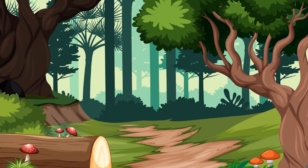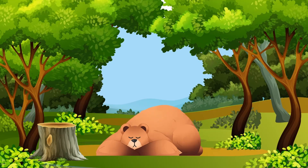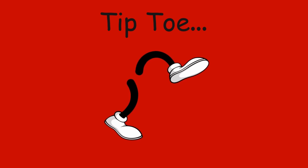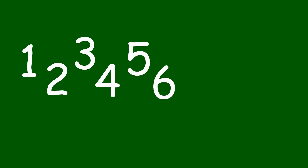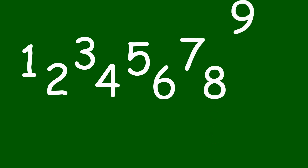We're going on a nature walk, you and me. We're going on a nature walk. What animals will we see? Oh, look. There's a bear. Shh. Tiptoe quietly. Let's not wake him up. Tiptoe. Let's count. One, two, three, four, five, six, seven, eight, nine, ten.